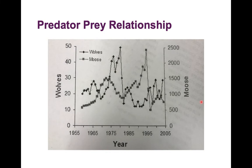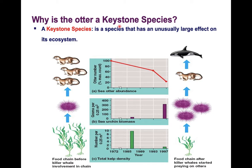Moving on, let's explore the term keystone species and figure out why the otter is a keystone species. The definition you'll need to write down in your note taker: a keystone species is a species that has an unusually large effect on its ecosystem.